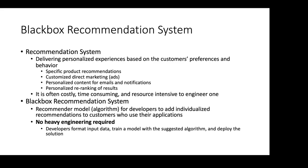For the terminology, a recommendation system delivers a personalized experience based on the customer's preferences — for example, specific product recommendations like YouTube, customized direct marketing, contents for emails, or re-ranking of search results. It is often costly to build, so large companies like AWS offer a black box recommendation system. It is not for end users; it's actually for developers to add individualized recommendation service in their applications, and no heavy engineering is required.